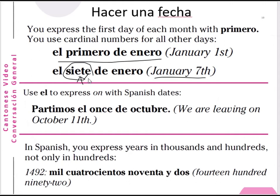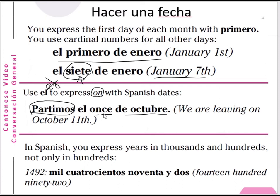Rule two: use 'el' to express 'on.' We don't use 'en' to express 'on' for a specific Spanish date. For example, 'Vivimos el once de octubre' means 'We are living on October the eleventh.' 'Vivimos' means 'we are living,' and 'el once de octubre' means 'on the eleventh of October.'